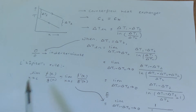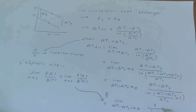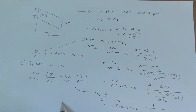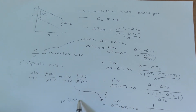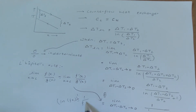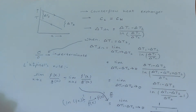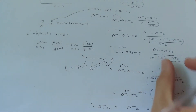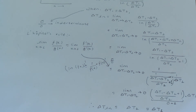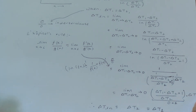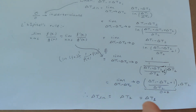Now I apply L'Hôpital's rule. The derivative of the numerator is 1. For the denominator, the derivative of ln of a function equals 1 over that function times the derivative of the function. So the derivative of ln of this part gives 1 over that part times its derivative, which simplifies to 1 over Delta T2. After some algebraic simplification, substituting Delta T1 minus Delta T2 tends to zero gives the result.